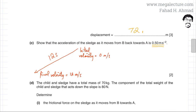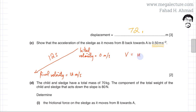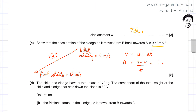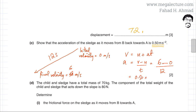Using the formula: acceleration equals (v minus u) divided by t. The final velocity is 6 meters per second, the initial velocity is 0, and the time is 12 seconds. So acceleration equals (6 minus 0) divided by 12, which comes out to be 0.50 meters per second squared. This confirms the value we needed to prove.